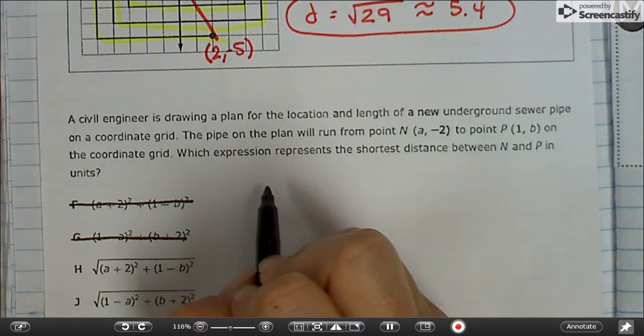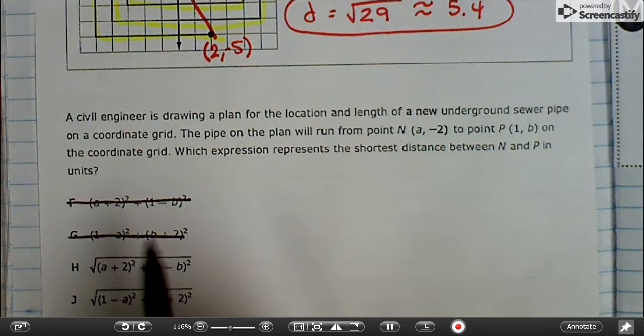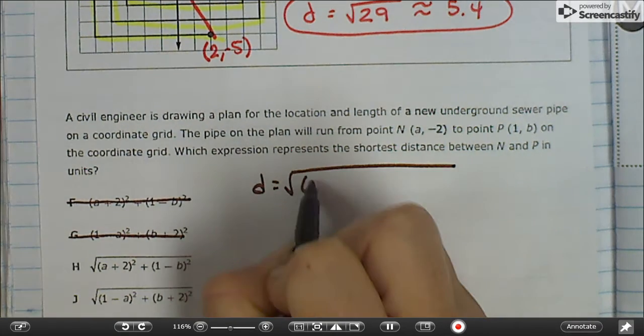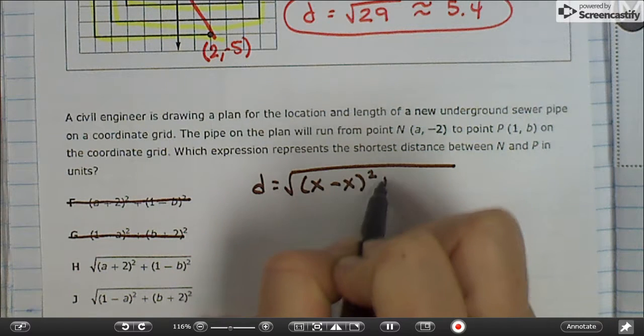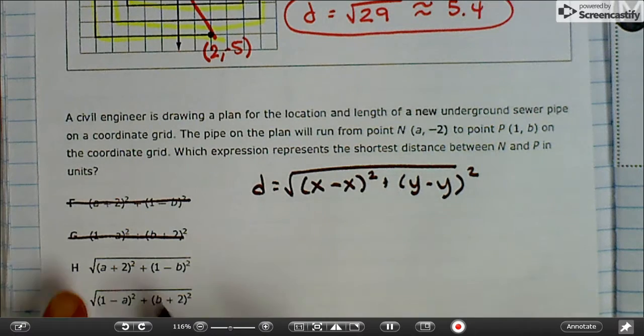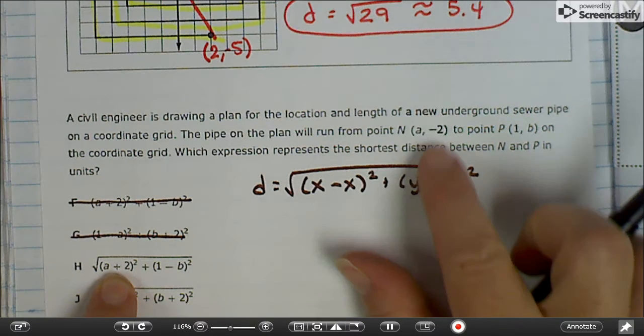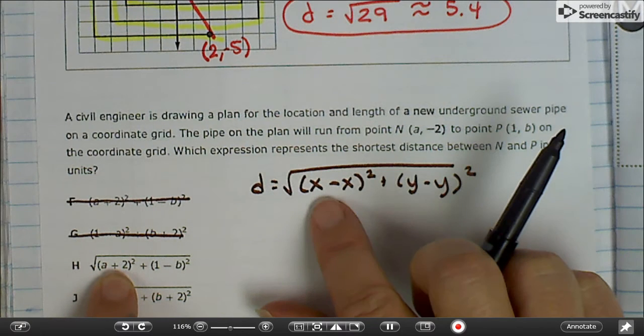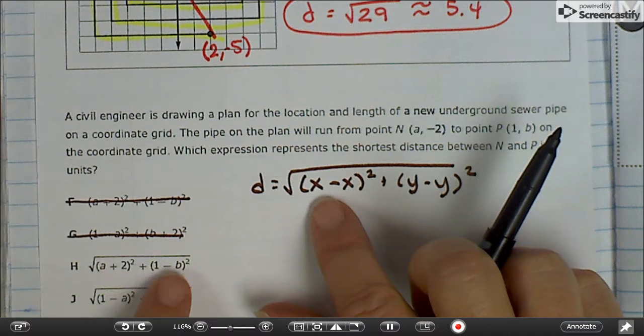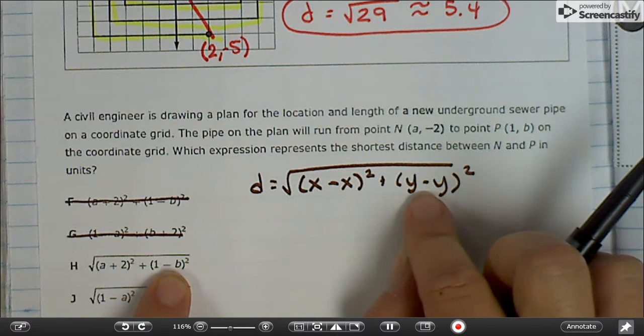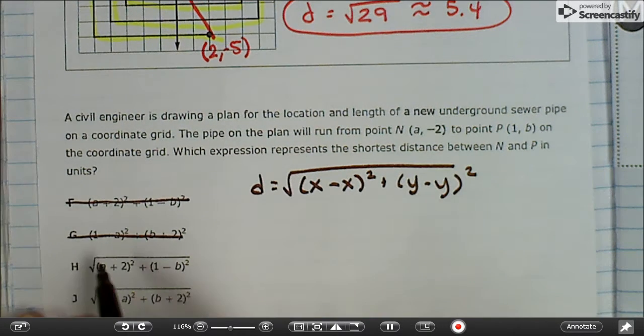The other two we need to look at. So the distance formula, even without writing it down, we know we're subtracting the X's and subtracting the Y's. And without even plugging stuff in, we can see here A and 2, those are both an X and a Y, not both X's like the formula is supposed to be. 1 and B are the X and the Y, not just two Y's. So this one's definitely wrong.